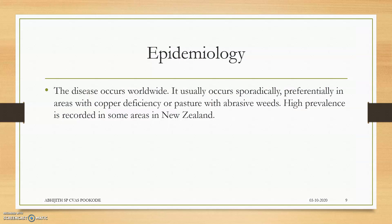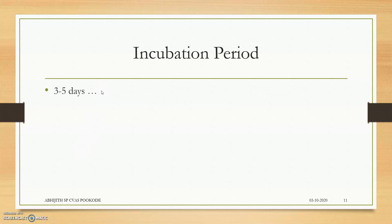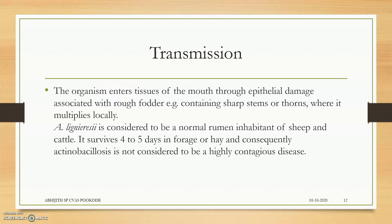The epidemiology: it is present all over the world, and high prevalence is present in New Zealand and also in America. It mainly affects cattle and sheep, but can also affect chickens, horses, pigs, and dogs. The incubation period is three to five days, but depends upon the bacterial load and condition of the animal.